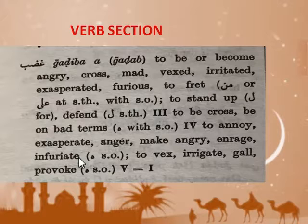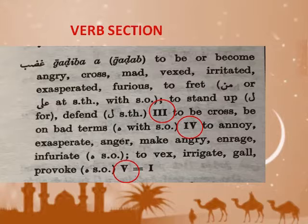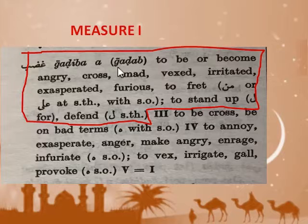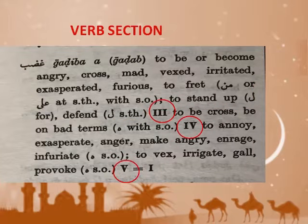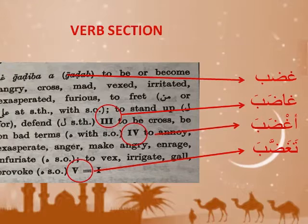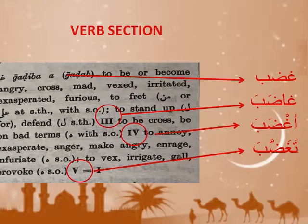You notice they don't have all ten Roman numerals, and this is true — most roots are not going to have all ten measures; there's no need for them, they would be redundant. In this case, Hans only has measures one, three, four, and five. The first part is all measure one — Hans doesn't put a Roman numeral I up there; he assumes you know that. So these are the only four verbs that exist for this root.